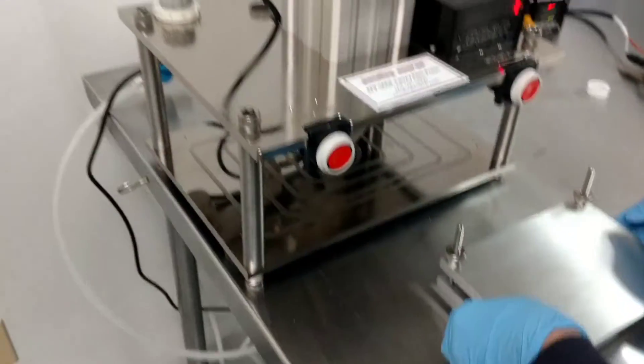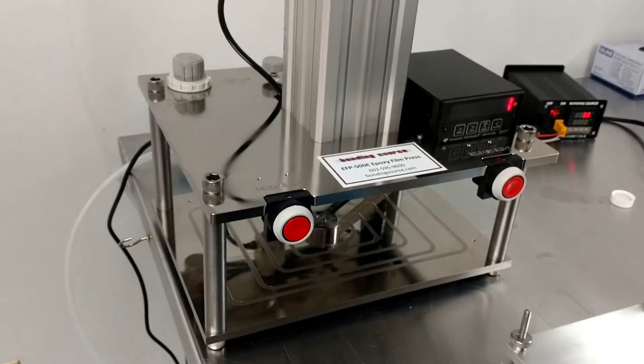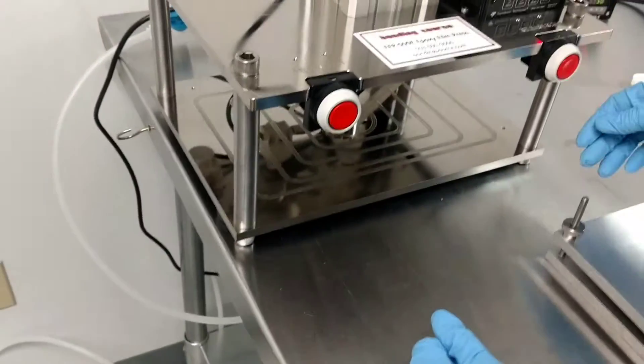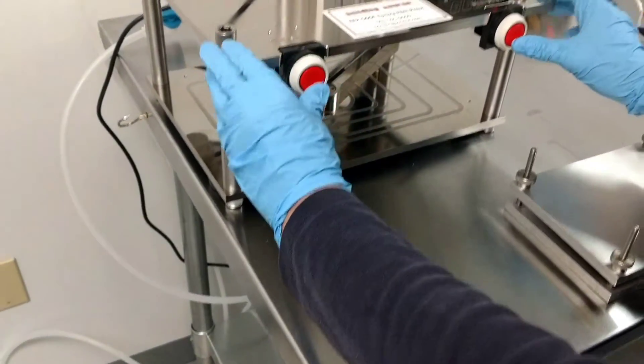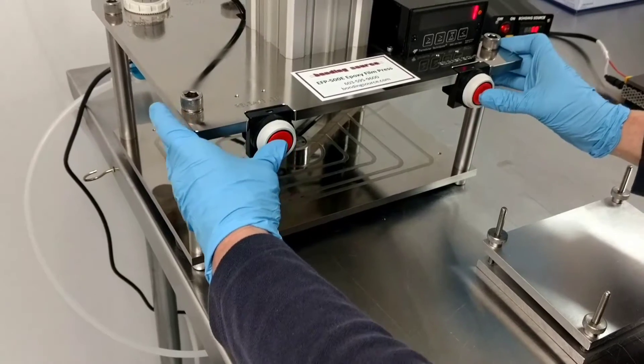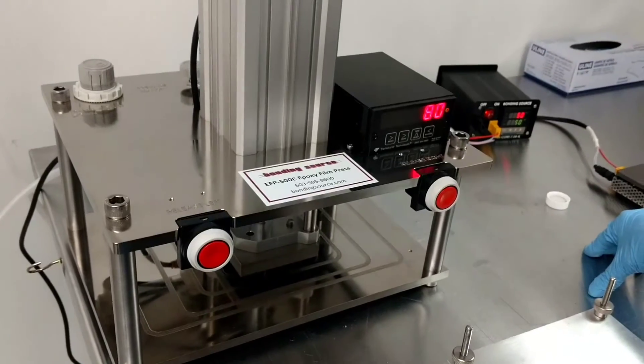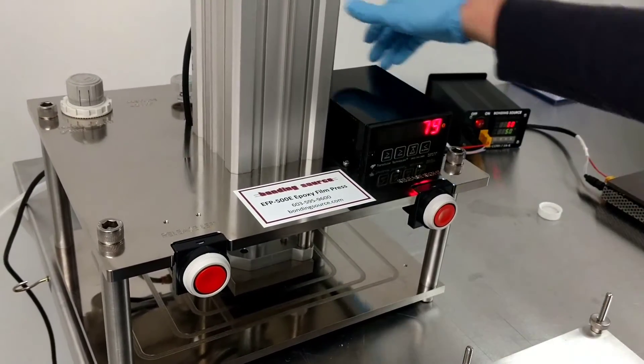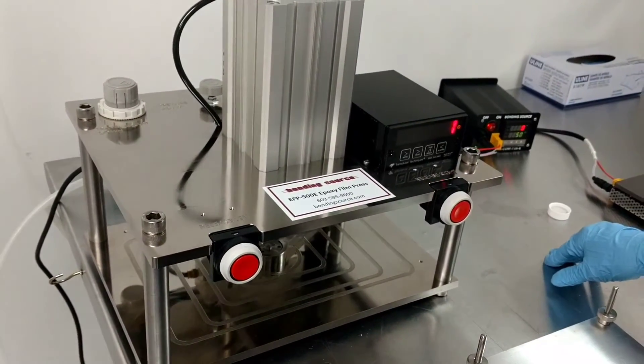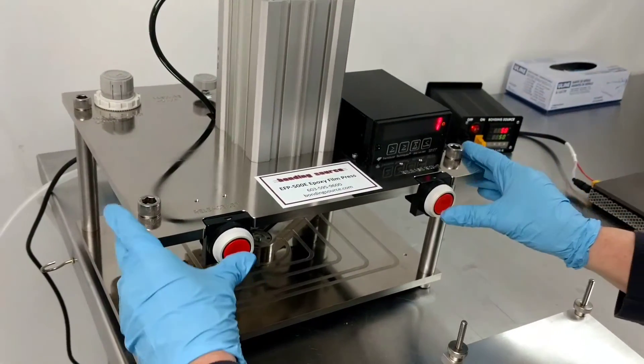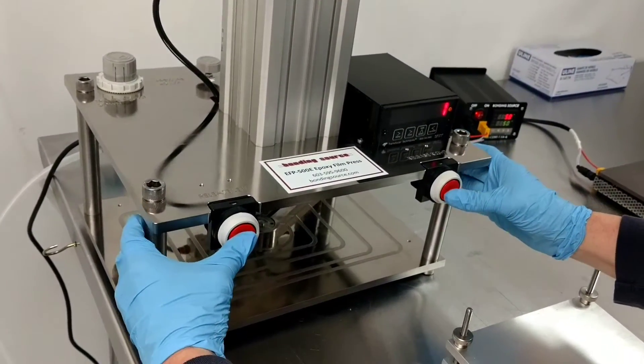And now what we're going to do is we're going to validate the pressure on the bonding press. We determined that 80 psi was the best for this module size. So she's going to bring the piston down onto the load cell and make sure that it reads 80 degrees. We'll do that one more time just to make sure. It's kind of like doing any kind of calibration in a manufacturing facility.